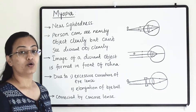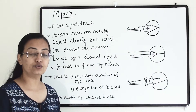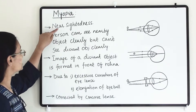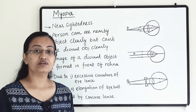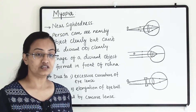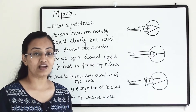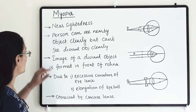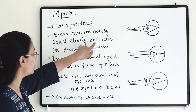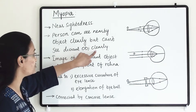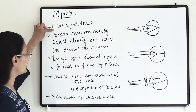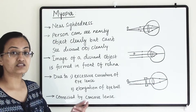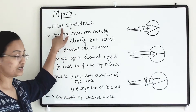Myopia is a defect related to the eye, and that eye is also known as a myopic eye. The other name of myopia is nearsightedness. In this defect, a person will be able to see nearby things clearly but will have a problem seeing distant objects. So a person can see nearby objects clearly but cannot see distant objects clearly.